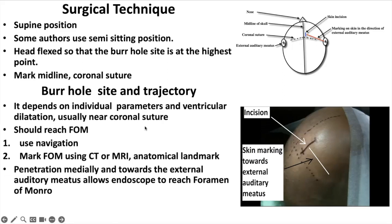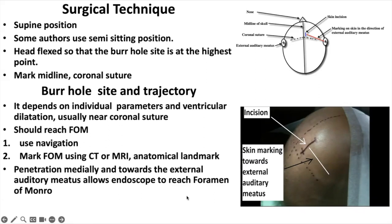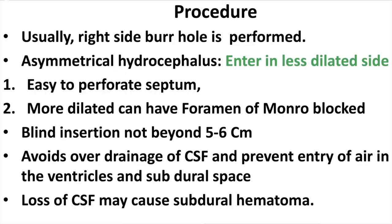The burr hole site depends on individual parameters and ventricular dilatation, and is usually near the coronal suture. One should reach the foramen of Monro — this can be done using navigation or by marking the foramen of Monro on CT or MRI, or using anatomical landmarks. The foramen of Monro is approximately 5 to 6 cm deep along a line joining the coronal suture to the external auditory meatus. The burr hole is usually on the right side.